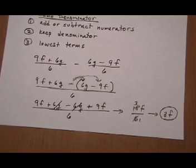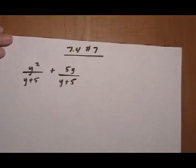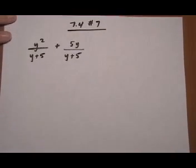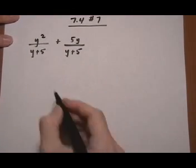And that's number 6. Let's take a look at another one. Number 7. Again, same denominator here. So we're going to go right to add the numerators. Keep the denominator.